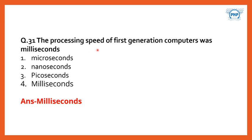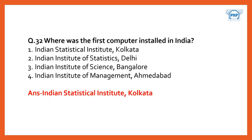The processing speed of first generation computers was in milliseconds. The answer is already mentioned in the question itself — it is milliseconds.